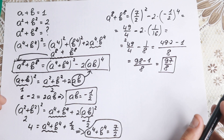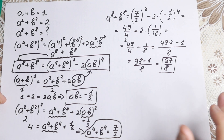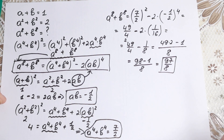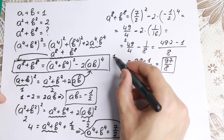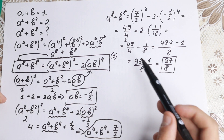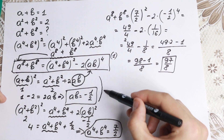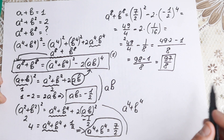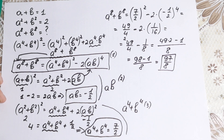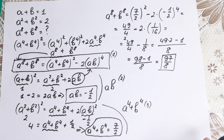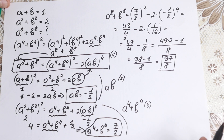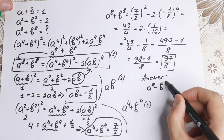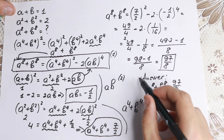I hope you understand this explanation — it is not an easy one, but if you pause the video and look at it for two minutes, you will easily understand it. We had three main steps: first we found AB, then in this equation we found the fourth powers — a to the fourth plus b to the fourth — and then the third step gave us our answer. So a to the eighth plus b to the eighth equals 97 over 8. As you can see, the answer is not 8 — it's bigger, approximately 12.